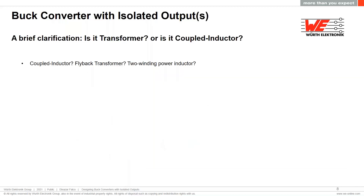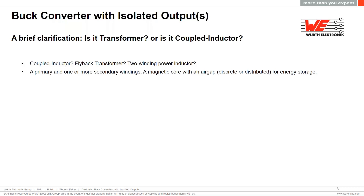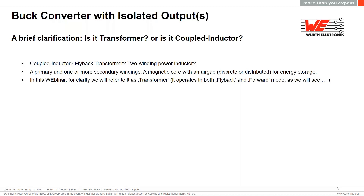Before moving on, let's make a small clarification. Should we call the magnetic component used in this topology a coupled inductor, a transformer, or a two-winding power inductor? Looking at its construction, it has a primary winding and one or more secondary windings wound around a magnetic core with an air gap — which can be discrete or distributed — meaning it can store energy. In this webinar, for simplicity, we will call this component a transformer, and we will see in the next slides that it actually works in both flyback mode and forward mode.